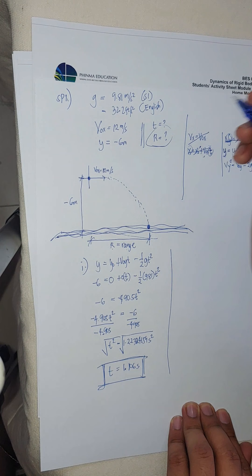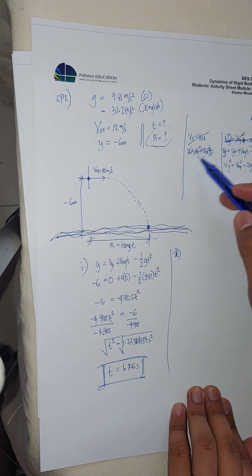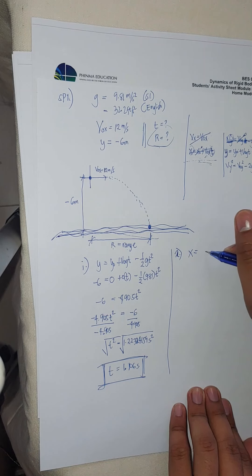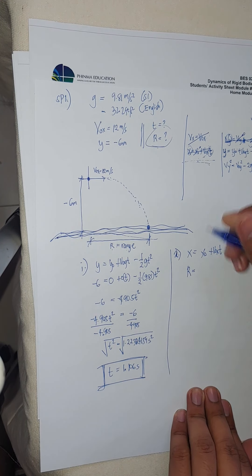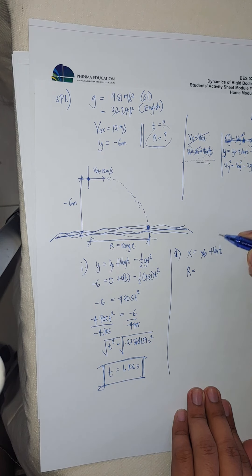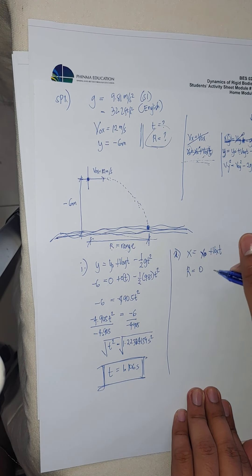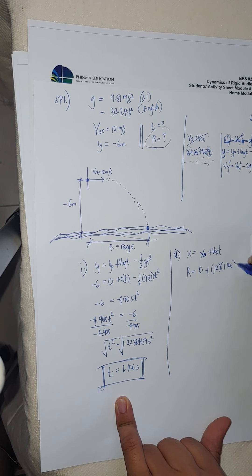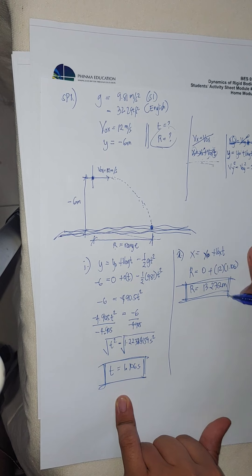Now for the second part, we need to find the range R. Since this is the horizontal component, we use X equals X-naught plus VOX times t. Setting X equal to R, the initial position X-naught is 0, the initial velocity is 12 meters per second, and the time is 1.106 seconds. Therefore, the range R equals 12 times 1.106, which gives us 13.272 meters.